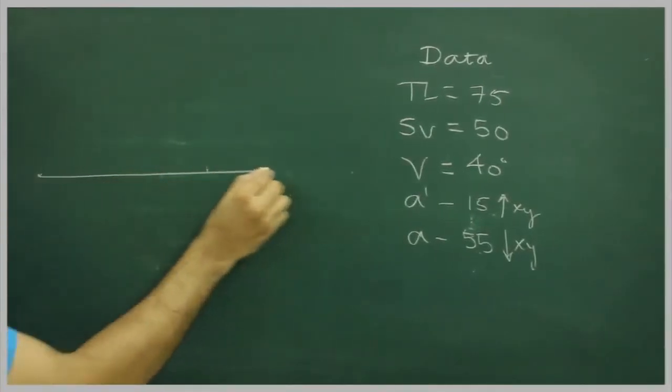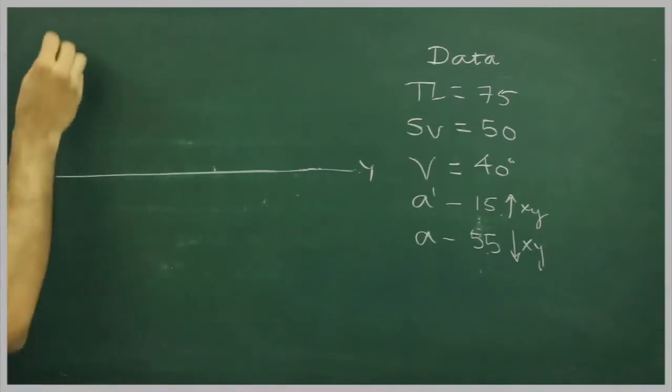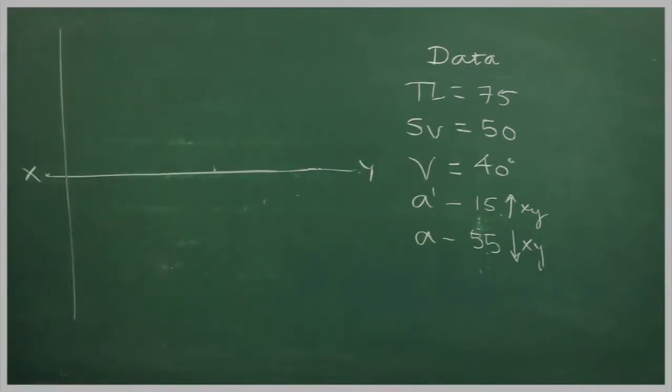So first we will draw x value, after that, line beam, point A dash and A.